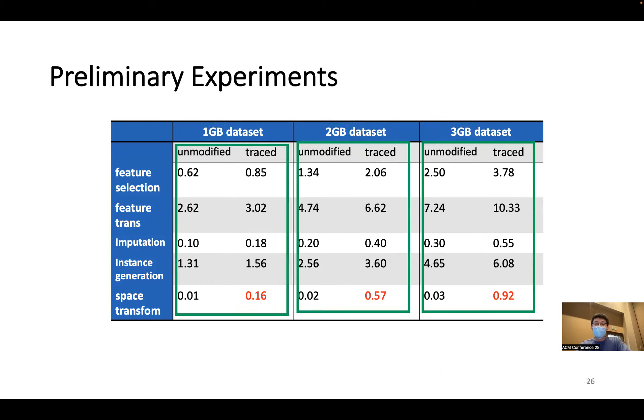We could see that the execution time for both versions scales roughly linearly with the size of the dataset. And we could also see that the additional overhead for tracing the provenance is marginal in most cases, except for the space transformation. And this is because the current implementation will save a copy of the entire data, even if only part of it is changed.